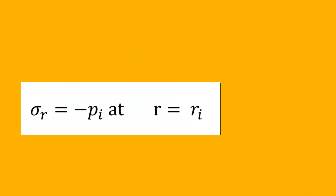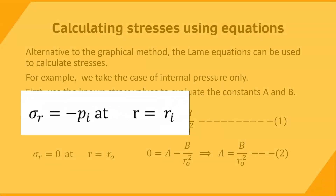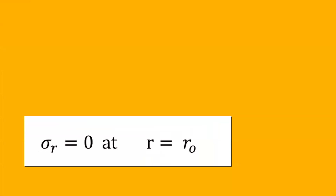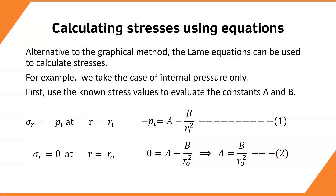At R = Ri, the value of σR is the value of internal pressure. At R = R₀, the value of σR is zero. By applying these boundary values, we have obtained two equations with A and B, so we will find A and B in terms of applied pressure and cylinder radii.